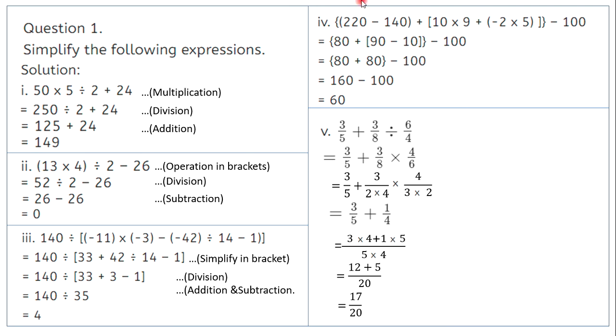Move on to sum number 4. Here we have a sum with the brace bracket involved. First solve the bracket. 220 minus 140 I get 80. 10 into 9 is 90. However, minus 2 into 5 will give me minus 10, so I will straight away write 90 minus 10. Then this another bracket I am supposed to solve first. 80 plus 80 minus 100, and 160 minus 100. Final answer I get as 60.